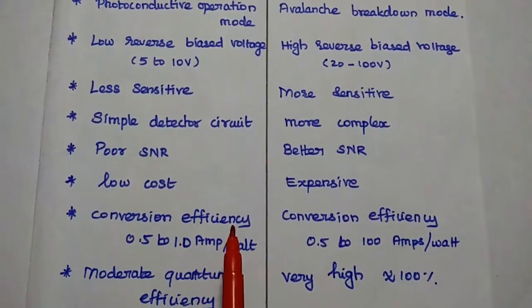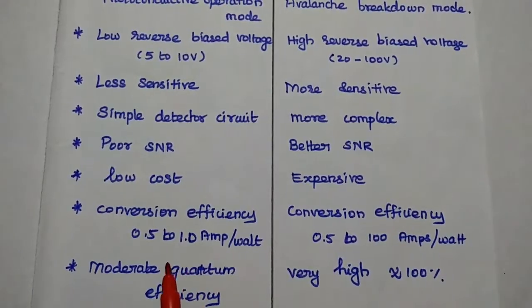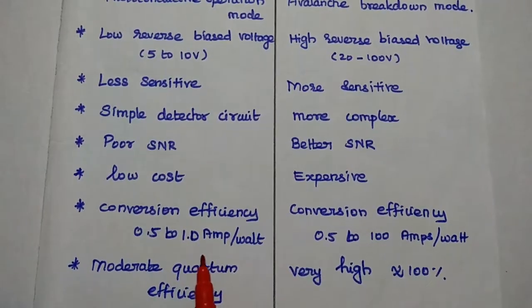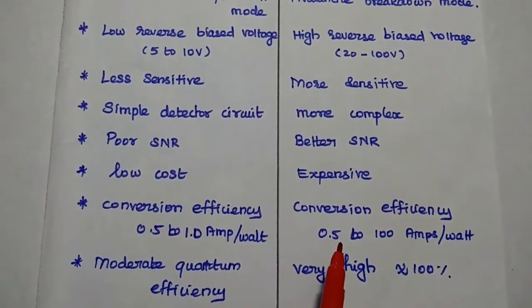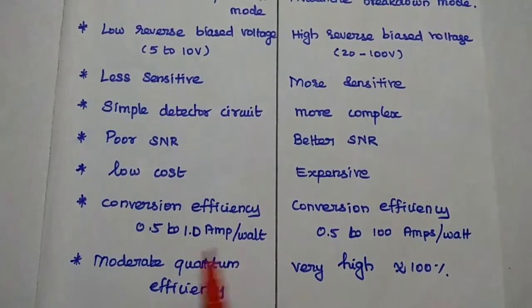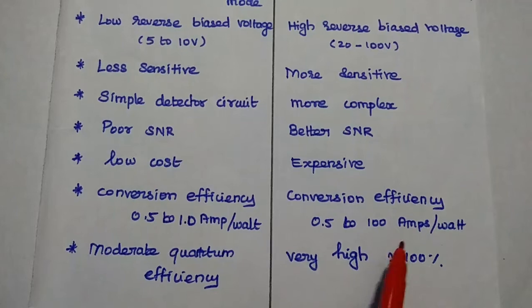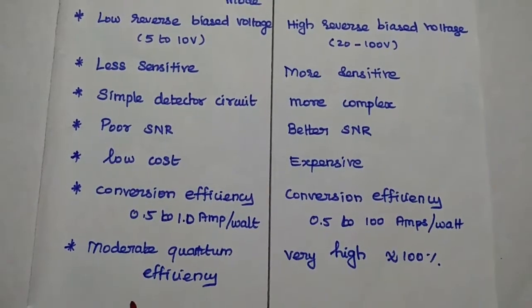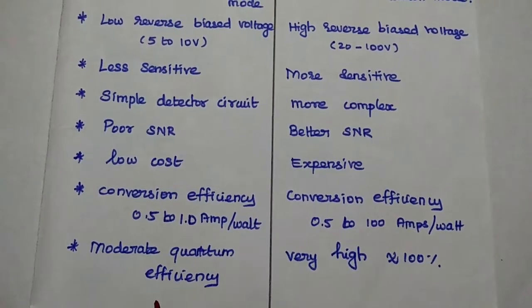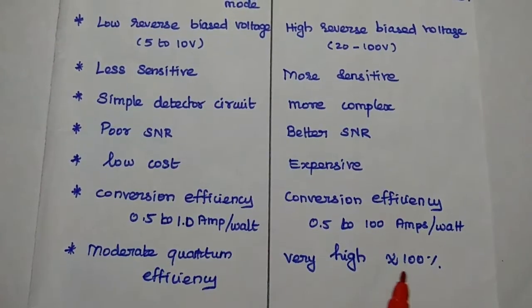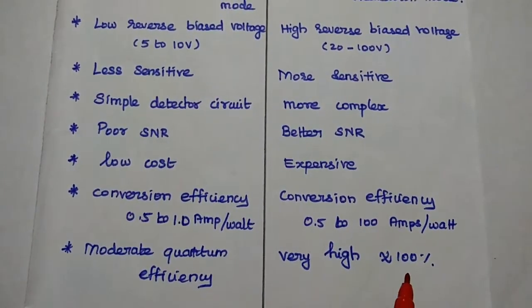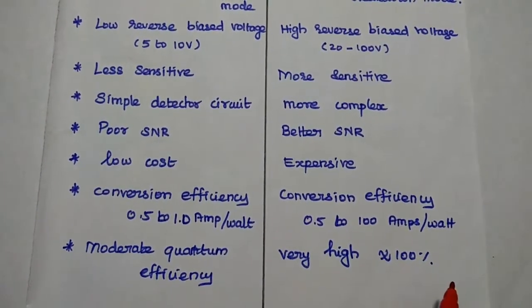The conversion efficiency is low, that is from 0.5 to 1 amps per watt. Here, its range is higher than this PIN photodiode. Its range is 0.5 to 100 amps per watt. So here the quantum efficiency is moderate one, but here its value is very high, approximately equal to 100 percentage.